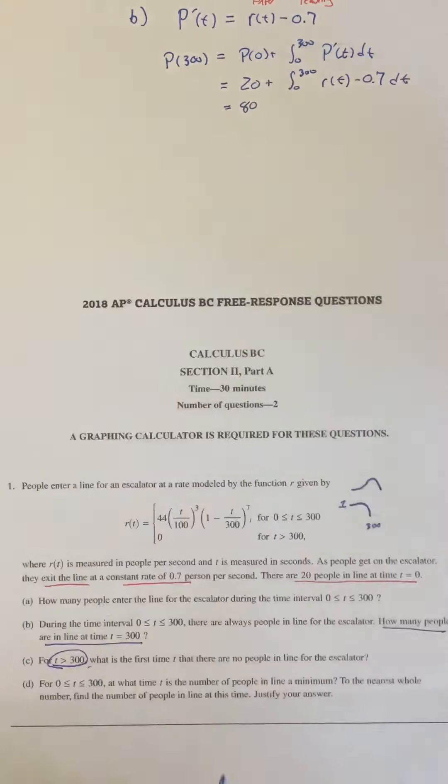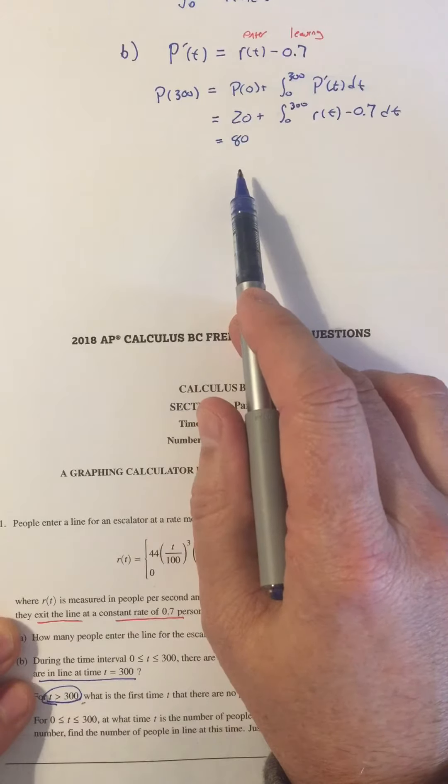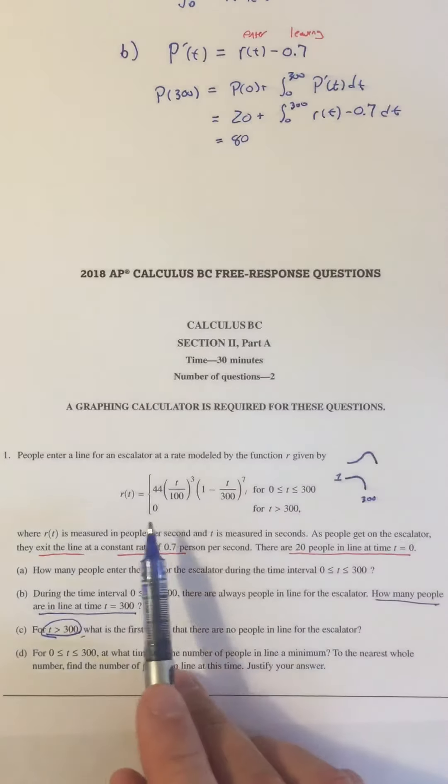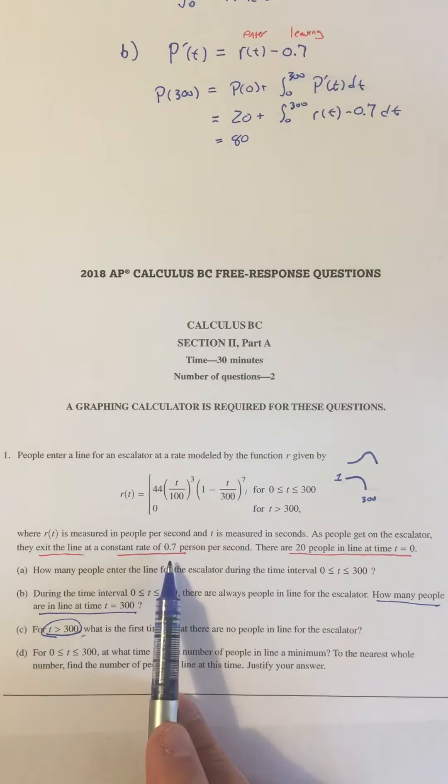Because we know that at t equals 300, we already figured out there's 80 people in the line. And we also know that they're not getting on the line. All they're doing is getting off at a constant rate of 0.7.